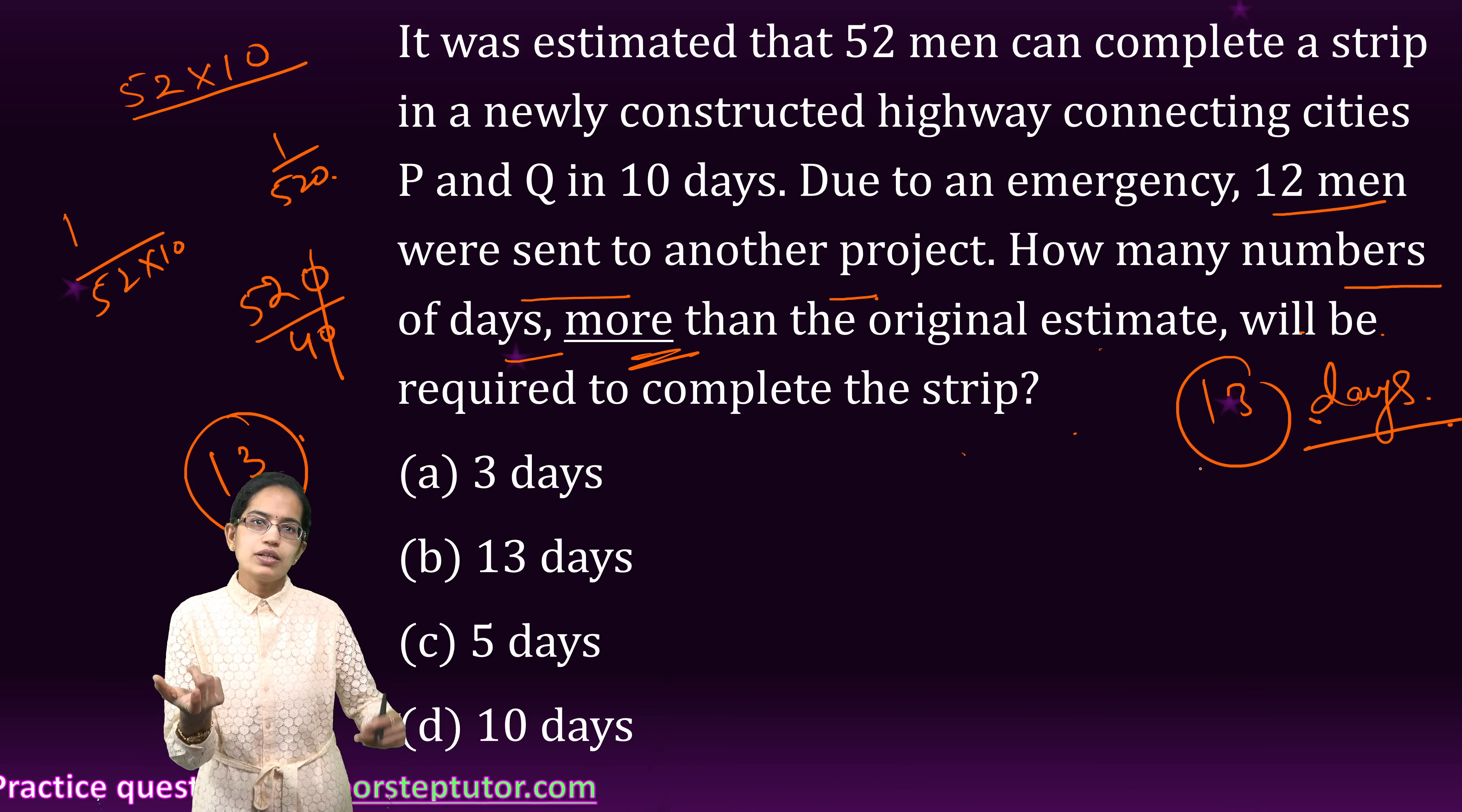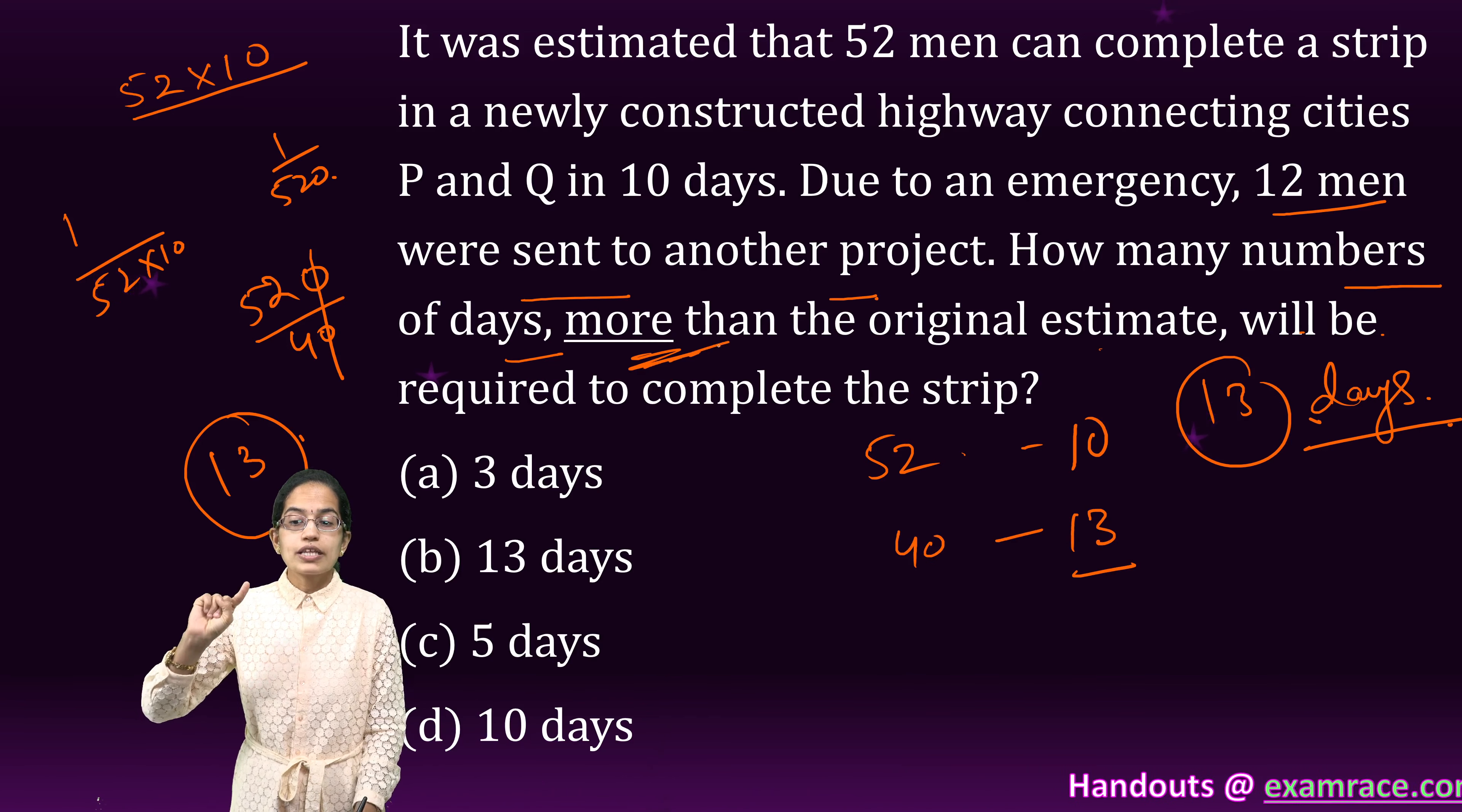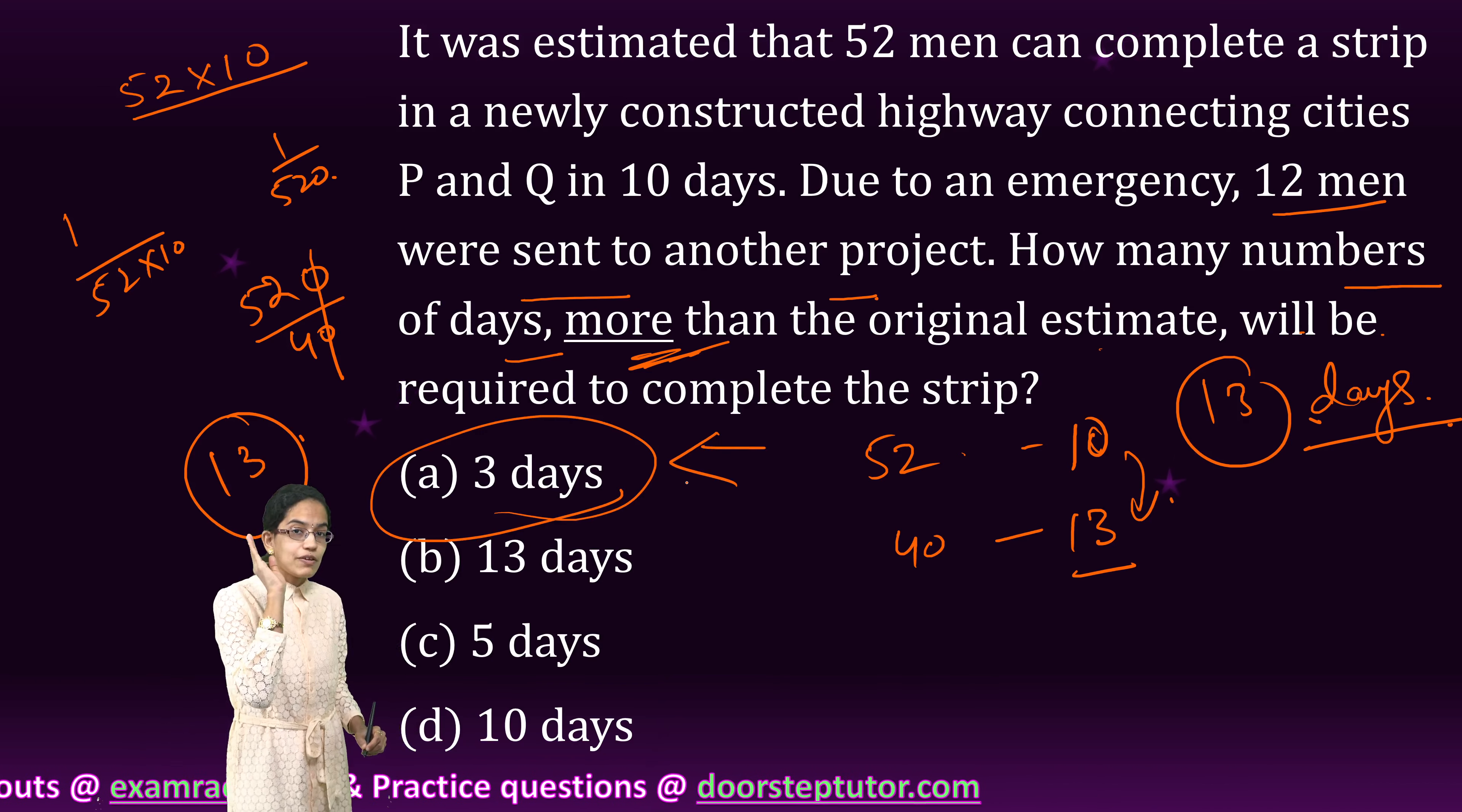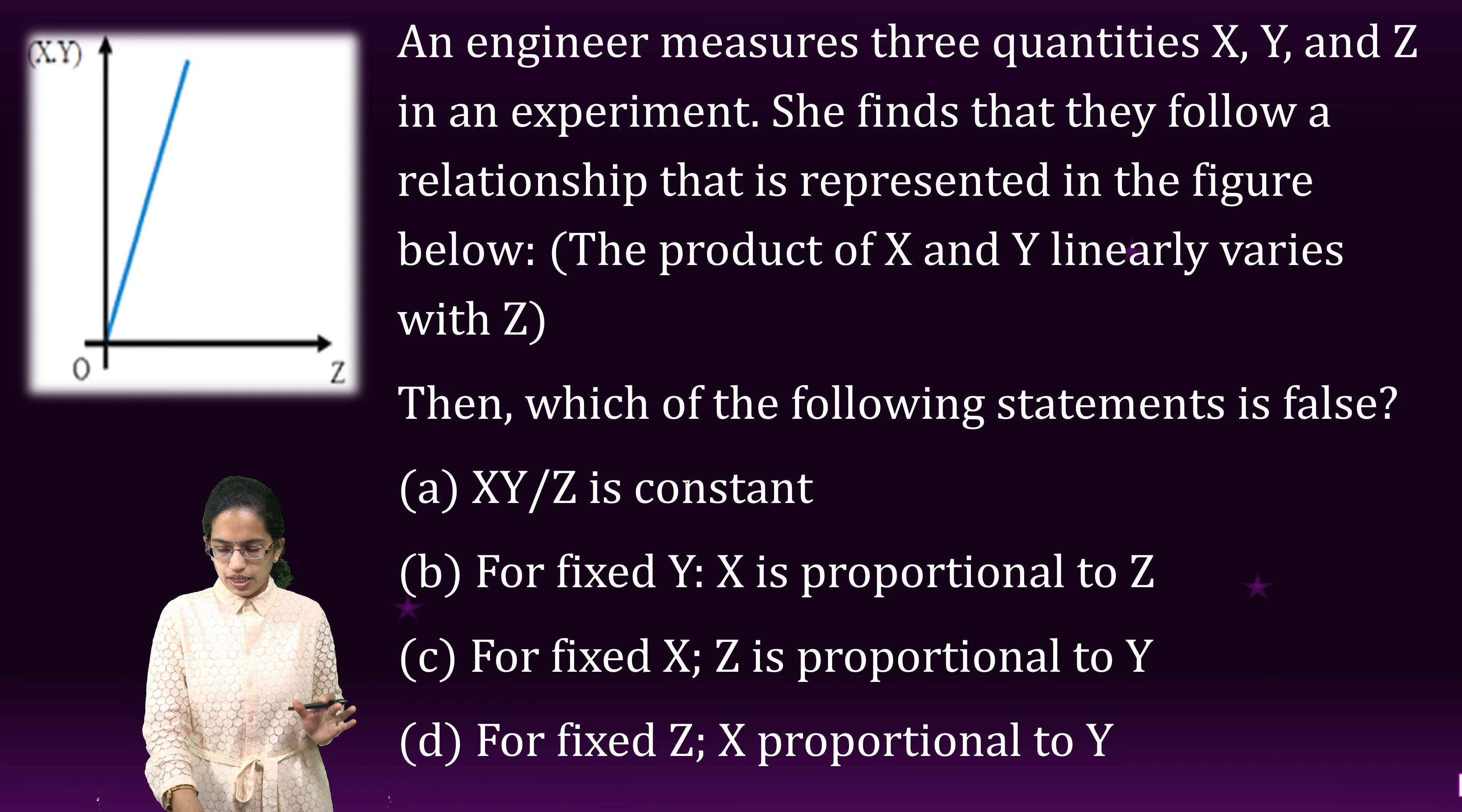It says how many number of days more than the original estimate would be required to complete. So total number of days required would be 13. Definitely when there are less people, more number of days. So when there were 52 people, 10 days was sufficient. When there are 40 people, I will require 13 days. But the question says how many more than the original estimate? So original estimate was 10. How many more? 3 days more. So here answer will not be 13, it would be 3. Be very particular about questions like this. And this is something that you must know while solving the question. Read the question very carefully.